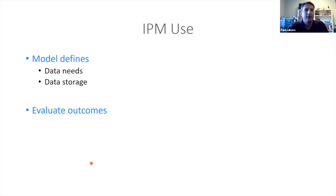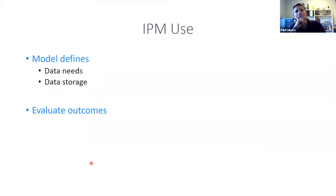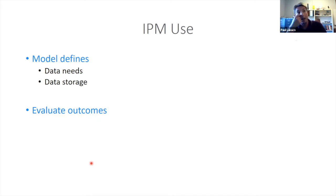Through this whole structure — setting up our model structure, observations, biological model, and observation model — we've been able to get a window into our data needs. Our model now defines what data are actually most efficient to collect. We can look at what kinds of data produce the best information gain in the model, and what are the best ways to store that data for flexibility in the future and quality control.